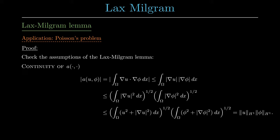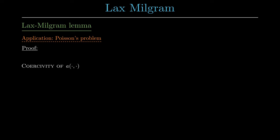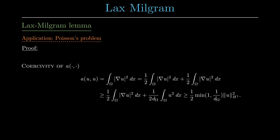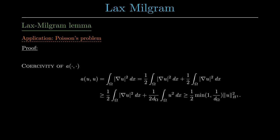Next, we show that the bilinear form is V-elliptic, which means that we want to show the coercivity of a. For this, we divide the integral into two parts and apply the Poincaré inequality to the second integral. By taking the minimum of the factors of these two integrals, we have shown the coercivity of a.